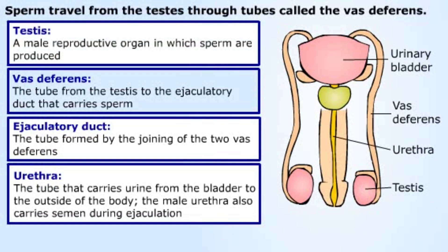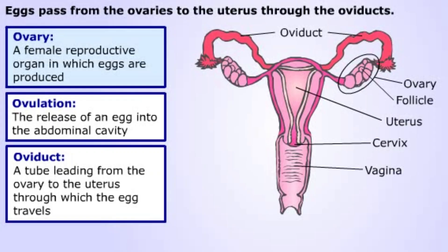Sperm travel from each testis through a tube called the vas deferens. In mammals, the two vas deferens join to form a short ejaculatory duct. The ejaculatory duct in turn joins to the urethra, which carries urine from the bladder to the exterior.